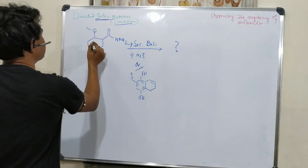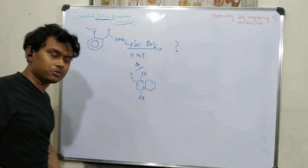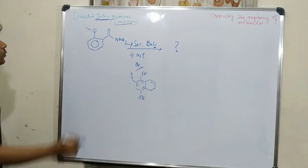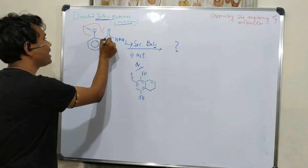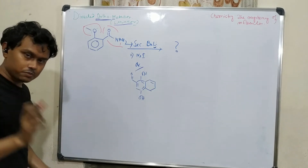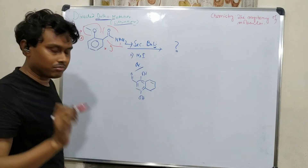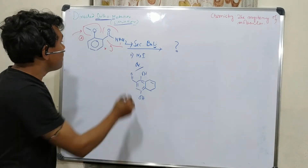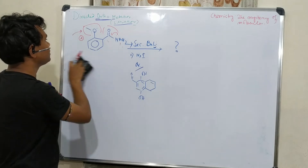Let's discuss another example of directed ortho-lithiation using sec-butyllithium. Here we have two types of directing groups. The question is which one will direct. As discussed previously, carboxamide groups are strongly ortho-directing because of the resonance of the lone pair. So ultimately, ortho-lithiation will happen on the side controlled by the carboxamide group.